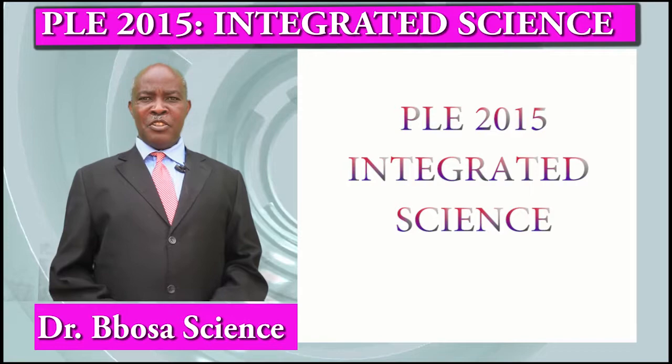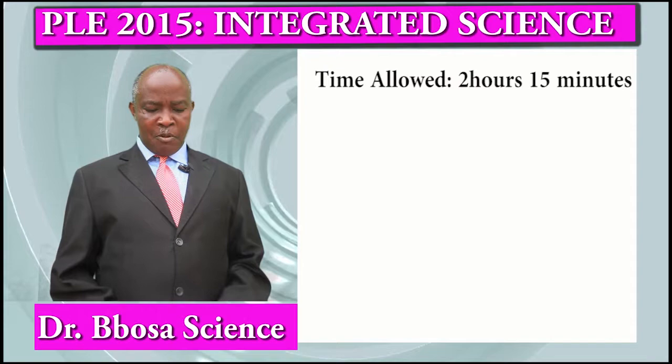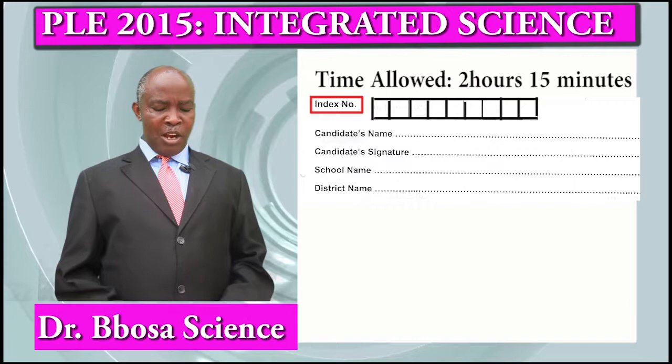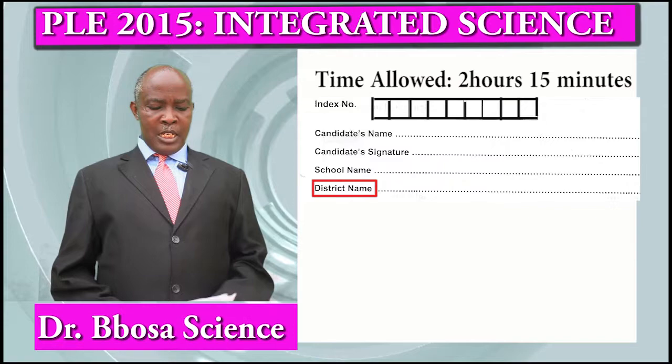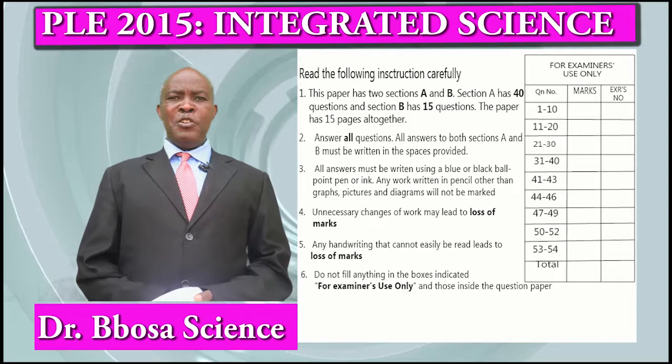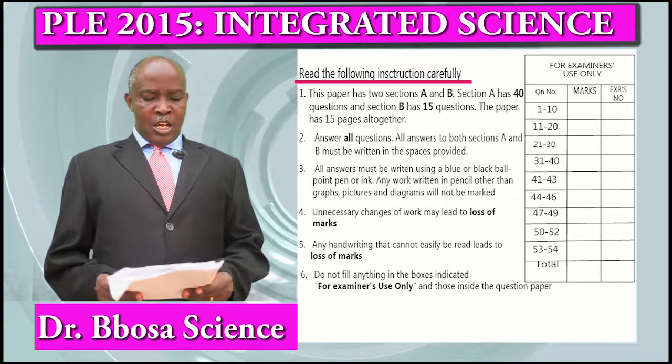Today, we are going to revise P.O.E. Integrated Sciences. Time allowed is two hours and fifteen minutes. You are required to put your index number, candidate's name, candidate's signature, school name, and district name. Before you do any exam, you are required to read the instructions carefully.